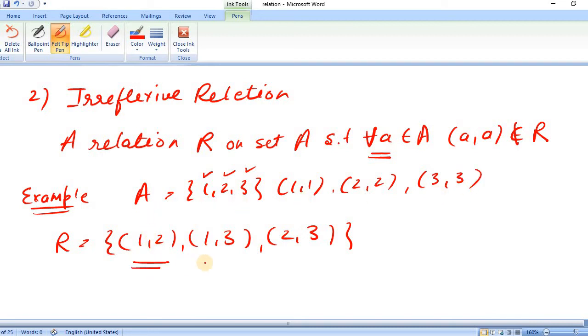Here we can say we do not have (1,1), neither we have (2,2), nor we have (3,3). None of these. Hence, this R will be termed as Irreflexive Relation.